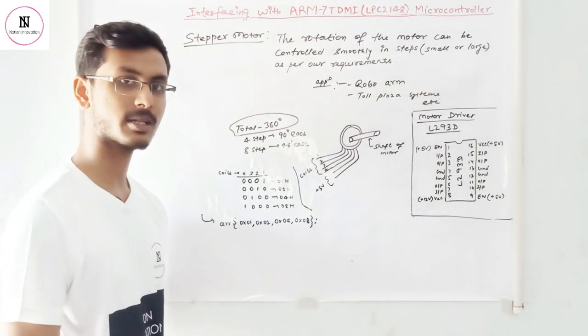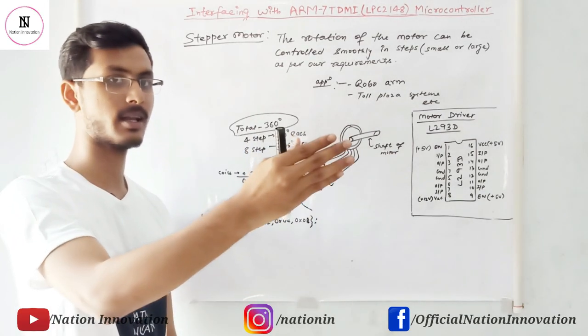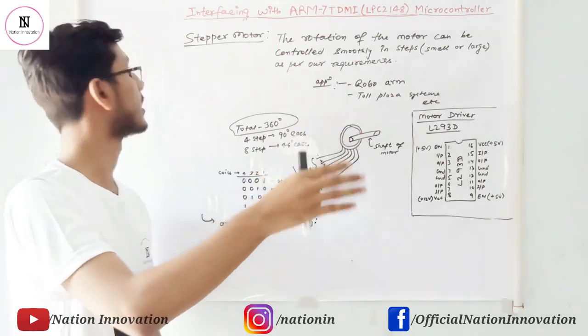Generally we see that in the robot arm, the rotation of motor is like some degree and some angle and that can be achieved by the stepper motor control.